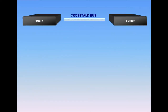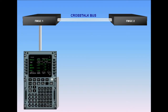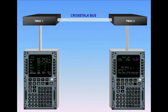Both FMGCs exchange data through a crosstalk bus and are synchronized. The FMGC which drives the synchronization is called master. The master FMGC is automatically determined by the engagement status of the autopilot flight director. If autopilot 1 is on, FMGC 1 is master. If autopilot 2 is on, FMGC 2 is master. If autopilots 1 and 2 and/or flight directors 1 and 2 are on, FMGC 1 is master.